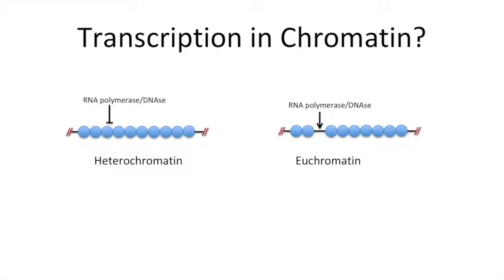The structure of chromatin is important for transcription. DNA will coil around these blue proteins called histones which forms nucleosomes. We call this heterochromatin.